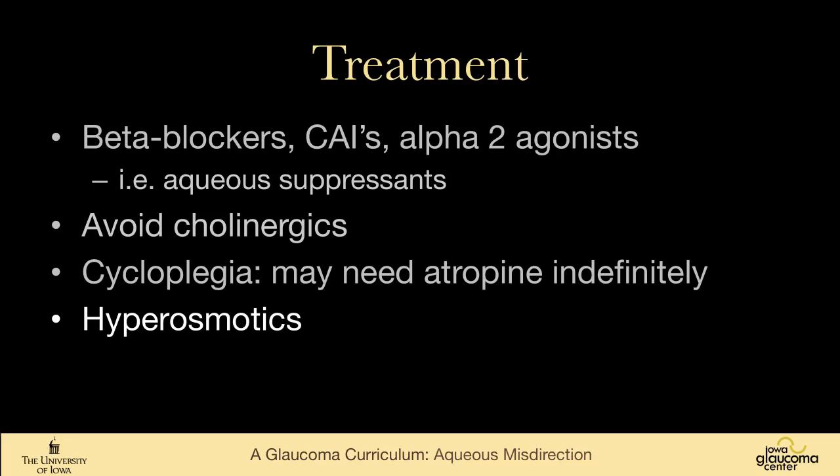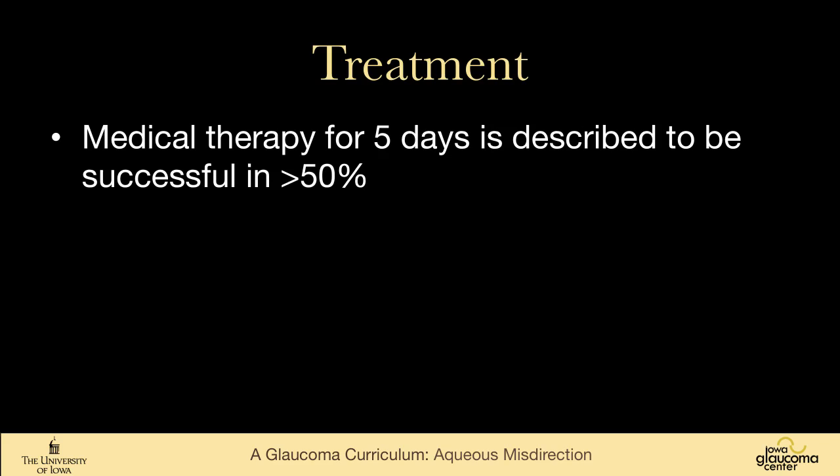This patient has a very diffusely shallow anterior chamber, and the video shows before and after the use of atropine — in this patient it made a huge difference. Osmotic therapy — mannitol or glycerol — can be used to shrink the vitreous and shake up the deranged flow of fluid into the posterior segment. The books say medical therapy for five days is successful in more than 50% of cases, but that really hasn't been my experience.